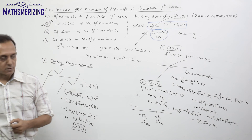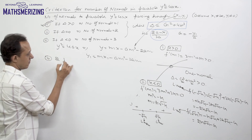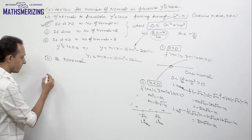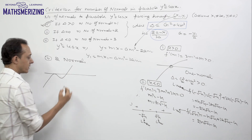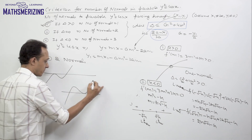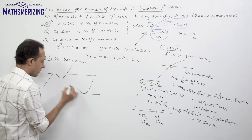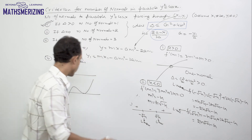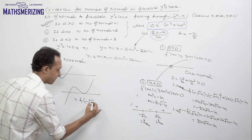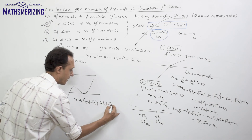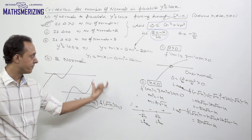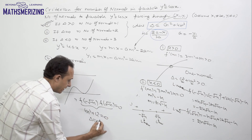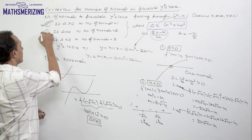For two normals, the cubic must have a repeated root, meaning the graph of f(m) just touches the x-axis at one of the critical points. This requires f(−√(−h)) · f(+√(−h)) = 0, which gives 4h³ + g² = 0, i.e., delta = 0. So when delta equals 0, the number of normals is 2.